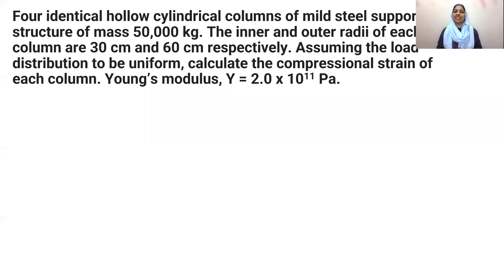Okay. We will be able to ask questions how to solve. Four identical hollow cylindrical columns support a big structure of 50,000 kg. Mass, entire mass 50,000 kg. Total force 5 into 10 raised to 4 into g. You will be getting it as 5 into 10 raised to 5 Newton total mass.